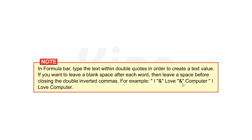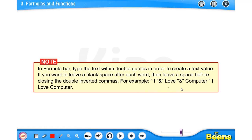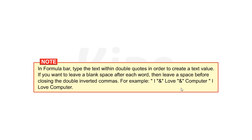If you want to give a space in between words, you have to include a space within double quotes. For example, to write 'I love computer' with one space between each word: double quote, space, I, space, double quote close, then & operator, then double quote, love, space, double quote close, then & again, double quote, space, computer, space, double quote close. In the output, each word will appear with one space — I, space, love, space, computer. This is what we covered yesterday.